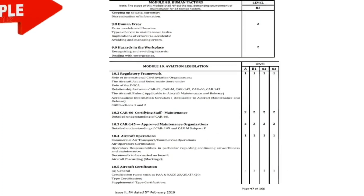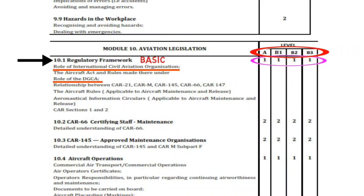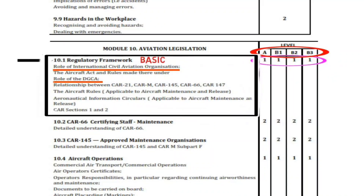Let us take Module 10 syllabus as an example. Subject 10.1 is Regulatory Framework, and its knowledge requirement is Level 1 for all categories. So as an applicant, you should know the basics of 10.1 — for example, what is the role of ICAO and what is the role of DGCA — and be able to define these in simple words. You just need a basic understanding.